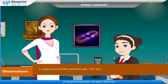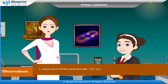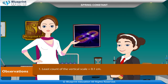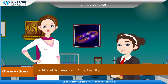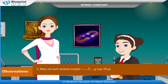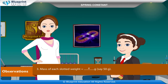Observations: The least count of the vertical scale is equal to 0.1 cm. The mass of the hanger is equal to x grams, say 50 grams. The mass of each slotted weight is equal to x grams, say 50 grams.